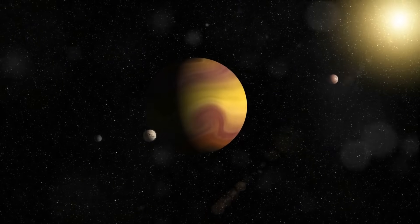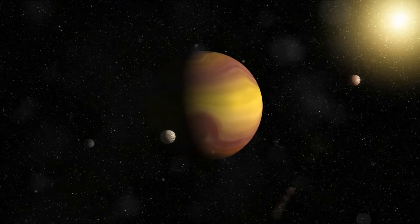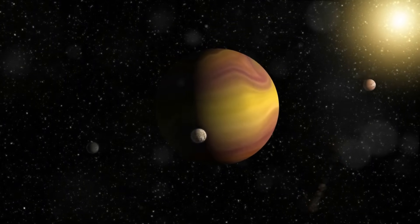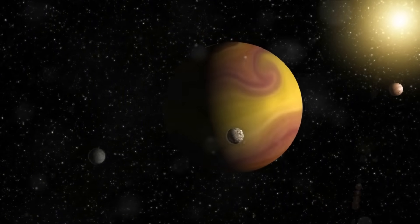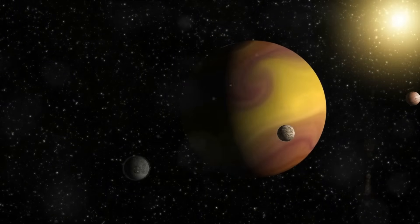But Jupiter's size isn't its only impressive feature. You see, unlike Earth, Jupiter is a gas giant, primarily composed of hydrogen and helium. Much like our Sun, it's a swirling, turbulent world of colorful clouds and hurricane-like storms.